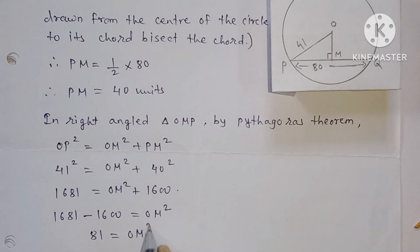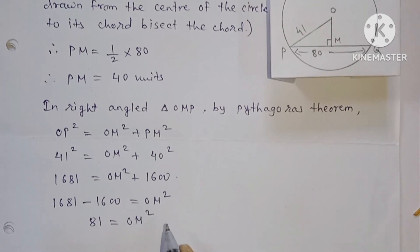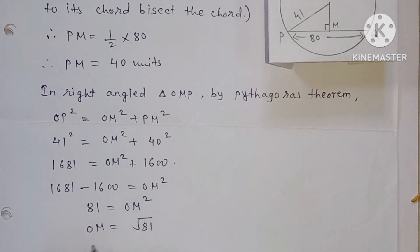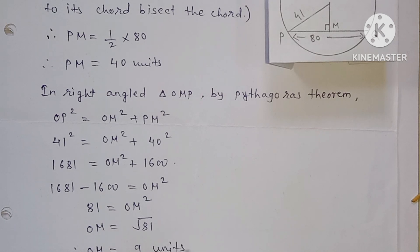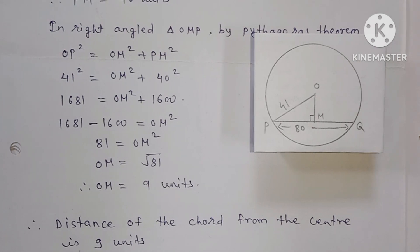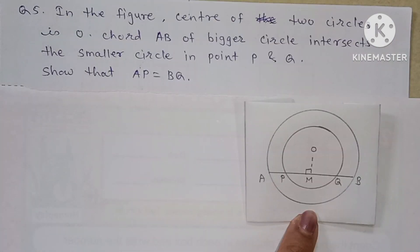So 81 = OM². Taking the square root, OM = √81 = 9. Therefore, OM is equal to 9 units. Hence, the distance of the chord from the center is 9 units. Now, next question — question number 5.